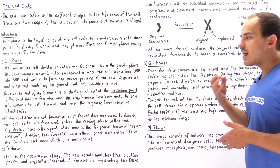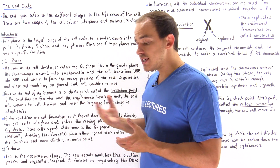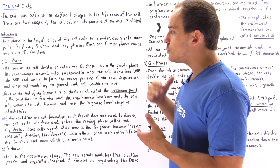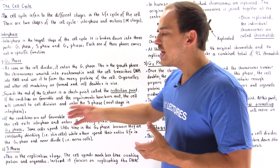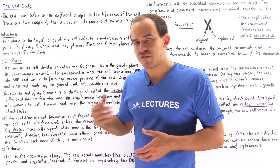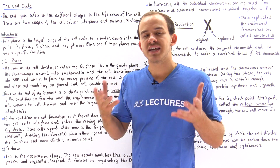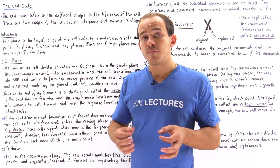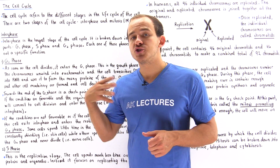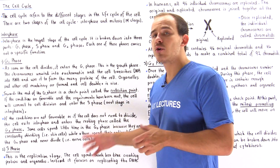If the conditions are favorable and the requirements have been met, then the G1 phase transitions into the S phase. If the G1 phase is the growth phase, then the S phase is basically the replication phase. In this phase, the cell also produces a small amount of proteins and organelles, but the majority of the cell's resources focus on DNA replication.